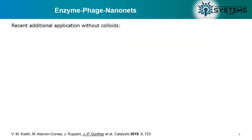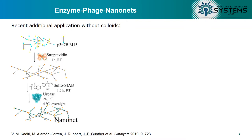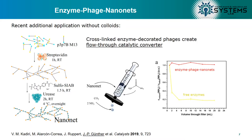Another application of enzymes and phages — this time without the colloids — is to directly link the phages together and decorate them with enzymes to form an active nanonet. This can then be used in a flow-through catalytic converter where you pump your substrate solution through the nanonet and collect the product solution at the end. You can also reuse the enzyme for multiple runs and the performance remains quite stable.